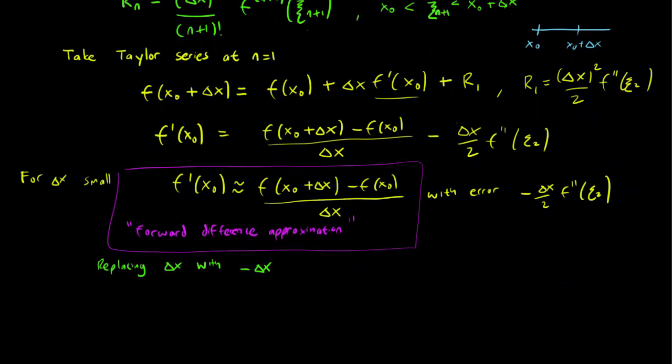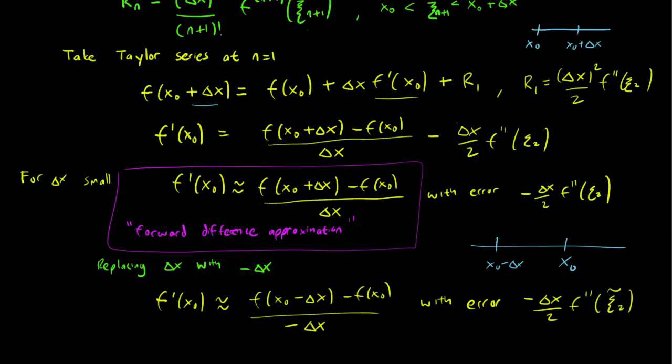So if we replace the delta x with minus delta x, so our graph looks like this, we're comparing x0 with x0 minus delta x instead, and we redo the entire thing. We start with Taylor series with f(x0 minus delta x). We get, in the end: